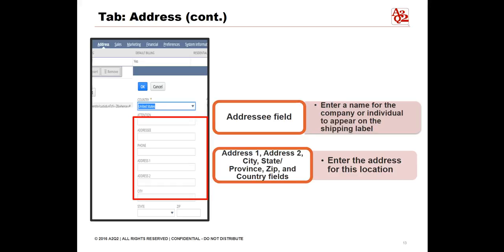10. In the Address 1, Address 2, City, State or Province, Zip, and Country fields, enter the address for this location. The information from these fields are displayed in the Address field. 11. Check the Override box if you need to edit the contents of the Address field manually. 12. Click OK. Repeat these steps for each address location for this record. Click Add to create a new address row. Note: you can enter an unlimited number of customer addresses. However, entering more than 100 addresses may result in a performance impact; the suggested limit is 100 addresses.